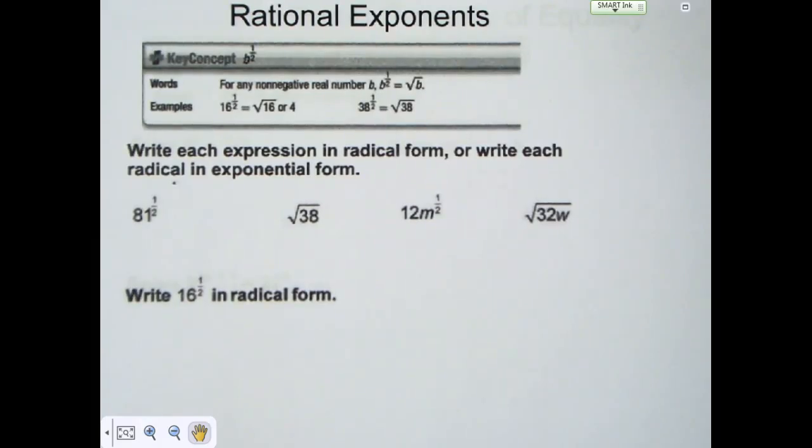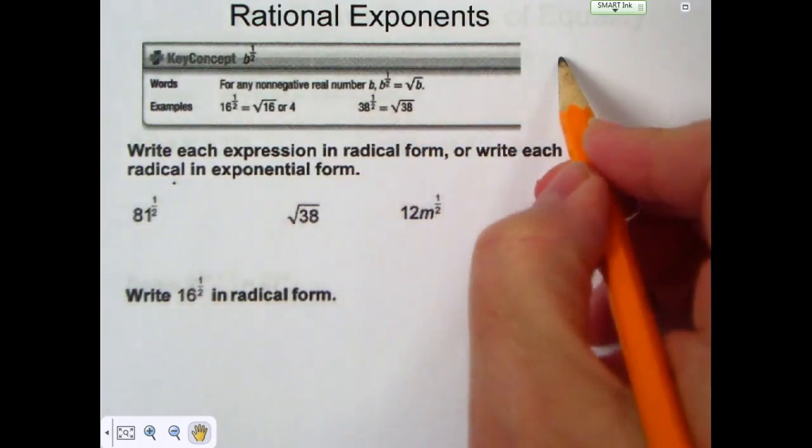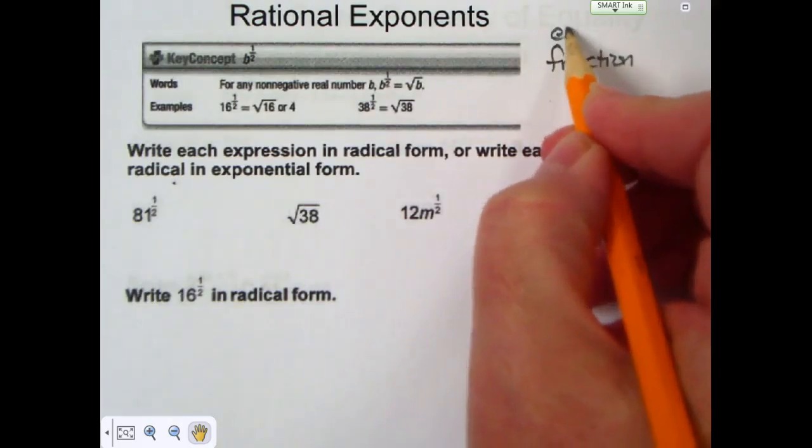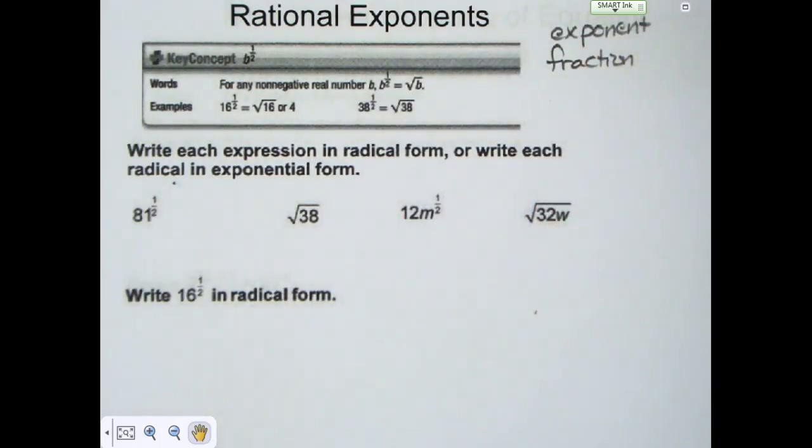Rational exponents are called rational exponents because there's more going on than just an integer exponent. In rational exponents you have a fraction for an exponent, and if your exponent is a fraction then the numerator has a meaning and the denominator has a meaning.